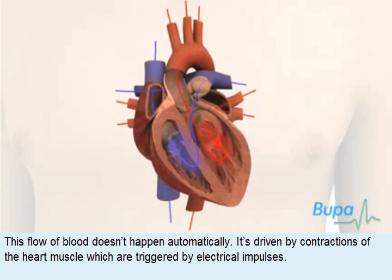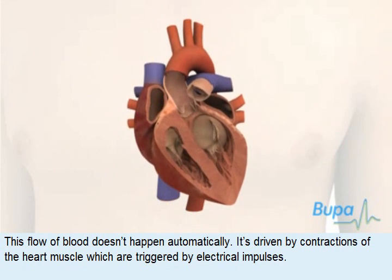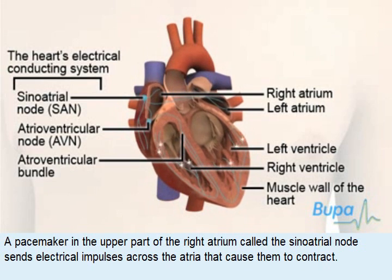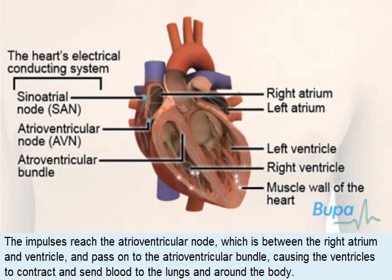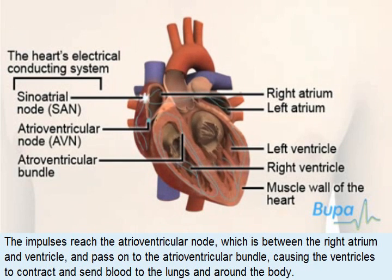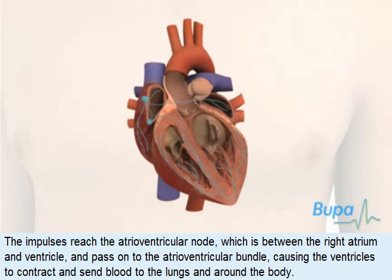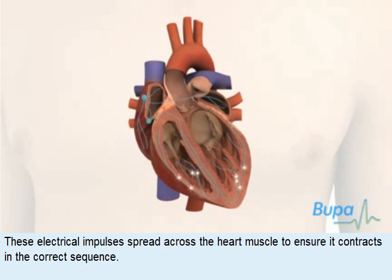This flow of blood doesn't happen automatically. It's driven by contractions of the heart muscle, which are triggered by electrical impulses. A pacemaker in the upper part of the right atrium, called the sinoatrial node, sends electrical impulses across the atria that cause them to contract. The impulses reach the atrioventricular node, which is between the right atrium and ventricle, and pass on to the atrioventricular bundle, causing the ventricles to contract and send blood to the lungs and around the body. These electrical impulses spread across the heart muscle to ensure it contracts in the correct sequence.